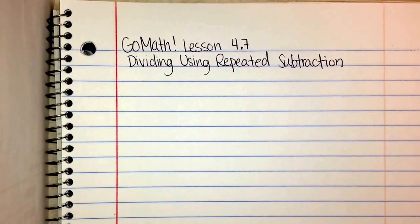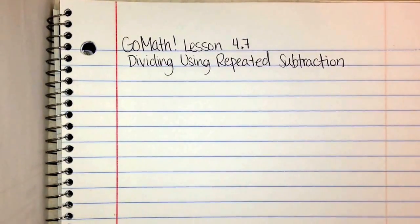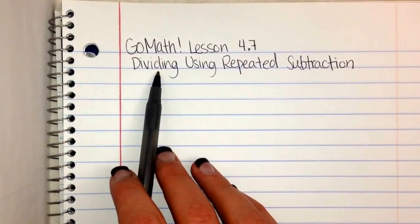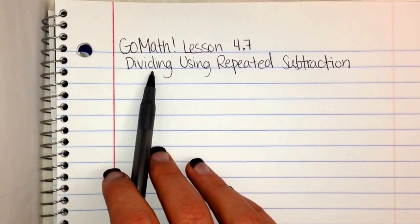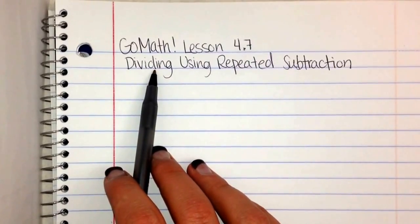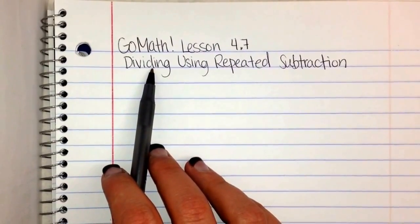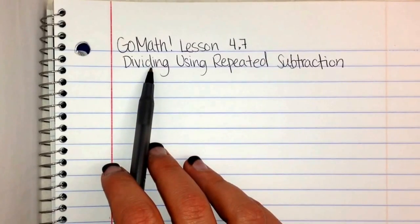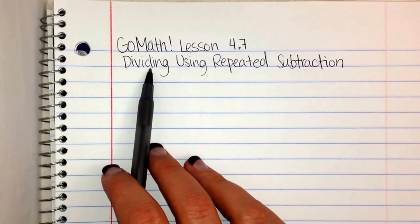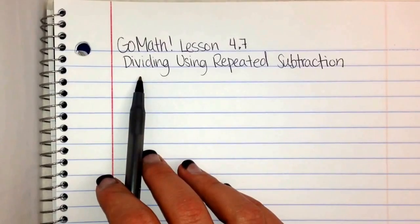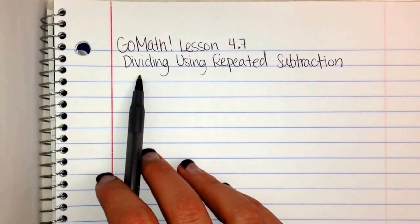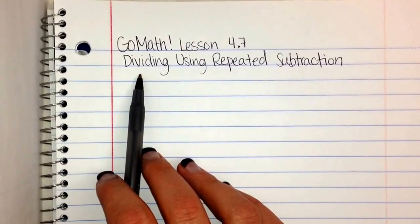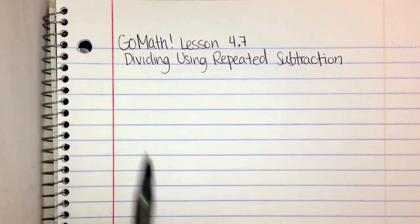This is GoMath lesson 4.7, and in this lesson we're going to learn a strategy for dividing using repeated subtraction. It's a little bit different from your traditional division that you might know, but this is just another one of those strategies you can use. Don't worry about it if you don't like it, because later on we'll talk about traditional division, long division, and short division, which might be easier for you. Some people find this way easier because they can think more in terms of multiplication than division. So let me show you how to do it.